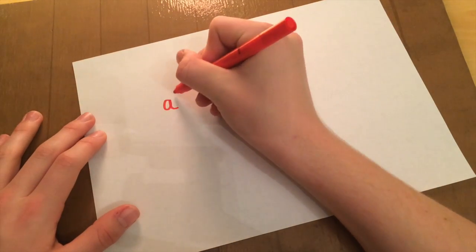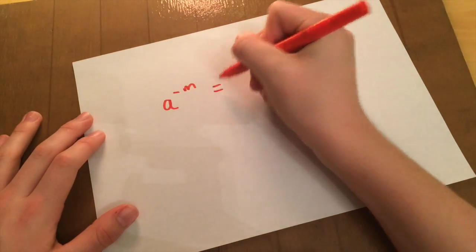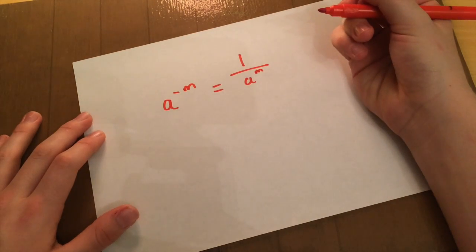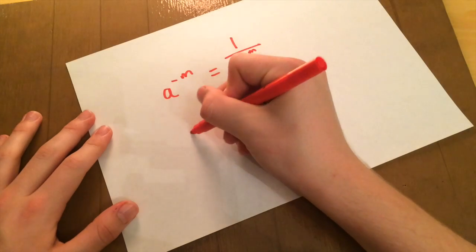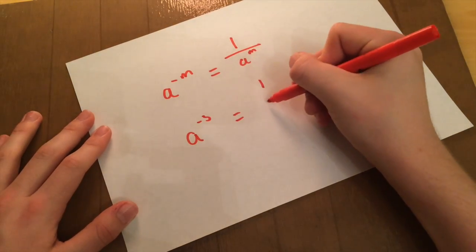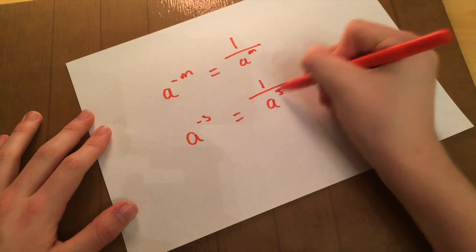Alright, I think the red pen works, so we're going to keep using this one. The next rule we're going to look at is A to the minus M equals 1 over A to the M. It seems pretty straightforward, so A to the minus 3 equals 1 over A to the 3.